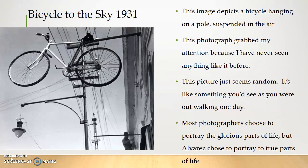Bicycle to the Sky, 1931. This image depicts a bicycle hanging on a pole suspended in the air. This photograph grabbed my attention because I've never seen anything like it before. This picture just seems random — it's like something you'd see as you were walking out on the street one day. Most photographers choose to portray the glorious parts of life, but Alvarez chose to portray the true parts.